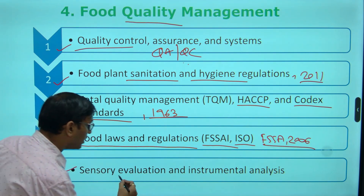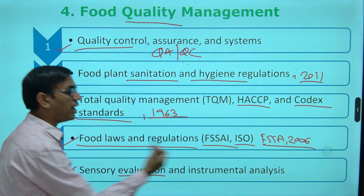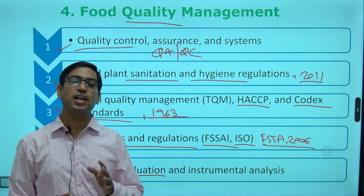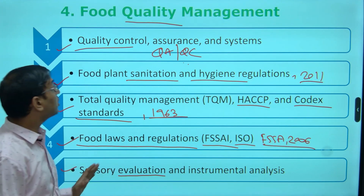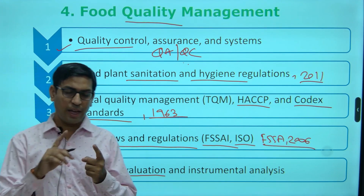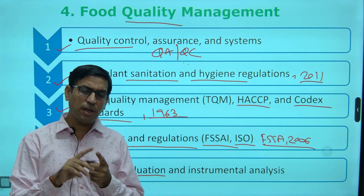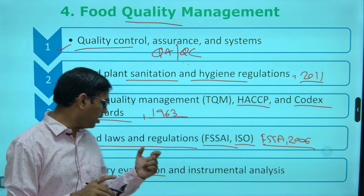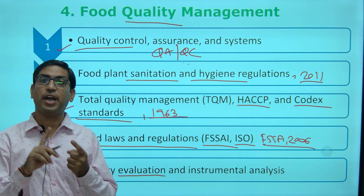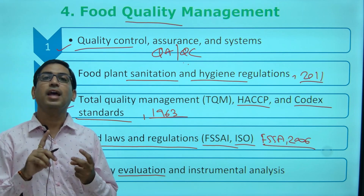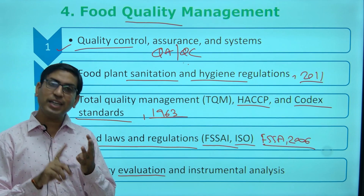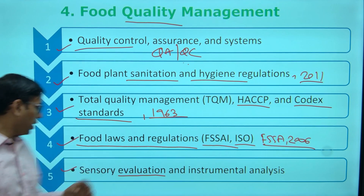Then sensory evaluation and specific techniques. When we are talking about sensory evaluation, the majorly important techniques could be the hedonic scale, paired comparison, Duo-Trio, and even the triangle test.